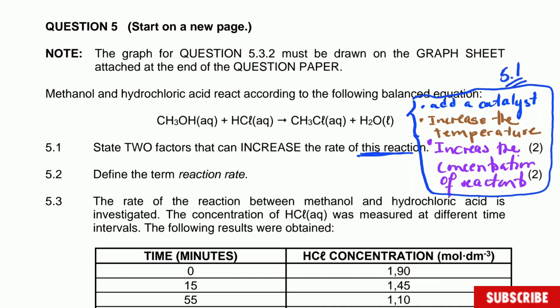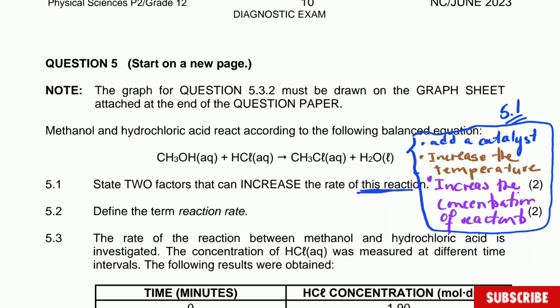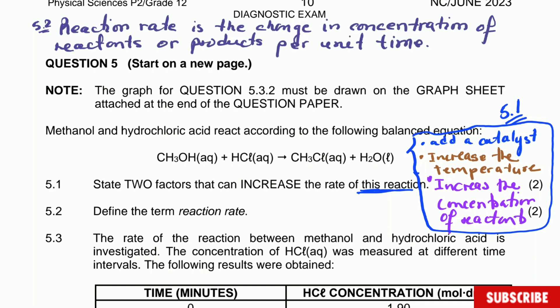Question 5.2: define the term reaction rate. The definition is: the change in concentration of reactants or products per unit time. In symbols, rate equals change in concentration divided by change in time — either reactants or products per unit time.